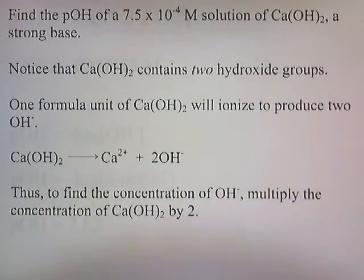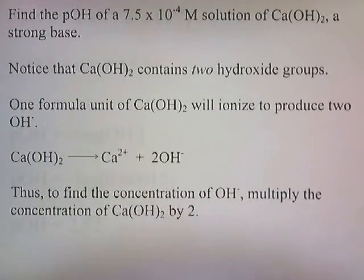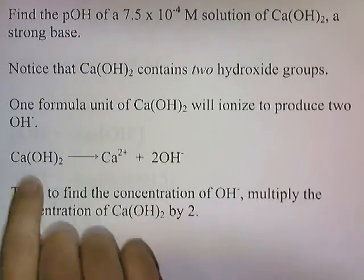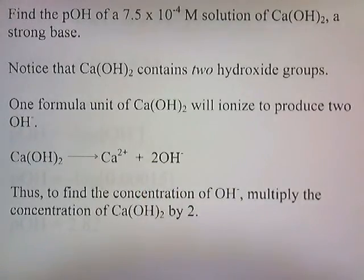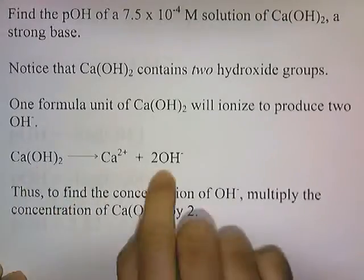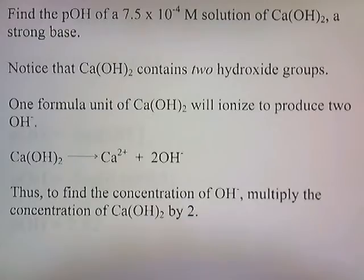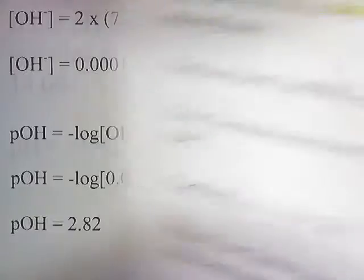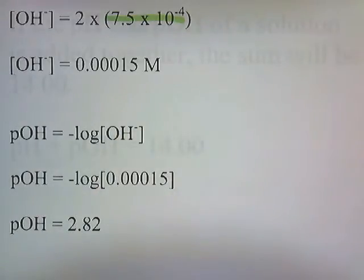Let's try another strong base problem. Find the pOH of a 7.5 times 10 to the negative fourth molar solution of calcium hydroxide, a strong base. Notice that calcium hydroxide contains two hydroxide groups — the subscript 2 outside the OH — so there are two hydroxides attached to the calcium. One formula unit of calcium hydroxide ionizes to produce two hydroxides, so to find the concentration of hydroxide, you multiply the concentration of calcium hydroxide by two. We multiply 7.5 times 10 to the negative fourth by two and get 0.00015 molar of hydroxide.